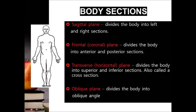There are several terms used when we divide our body into sections. First, sagittal plane — it divides the body into left and right sections. Frontal, also known as coronal plane, divides into anterior and posterior sections. Last one, oblique plane — it divides at an oblique angle.